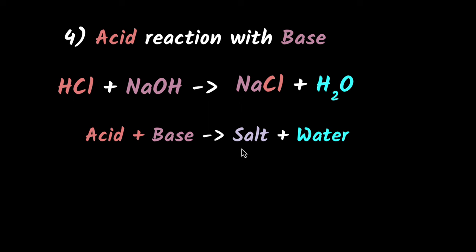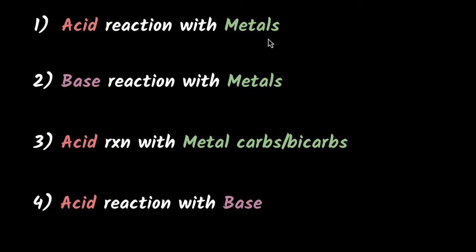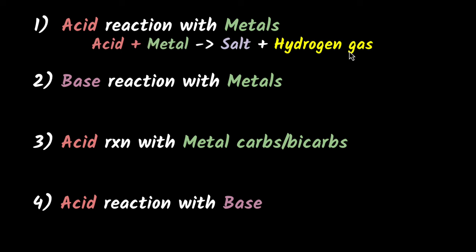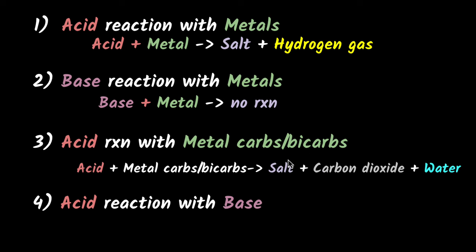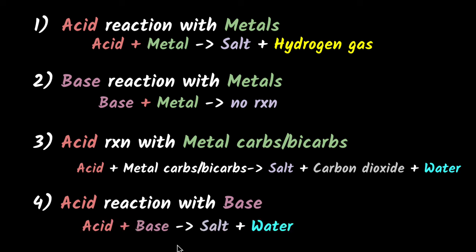Acids and bases always react to give salts and water. Let's summarize: acids react with metals to give salt plus hydrogen gas, because acids are H+ donors. Bases react with metals — in general, nothing, because bases are hydrogen acceptors and metals don't give hydrogen ions, with some exceptional cases. Acids react with metal carbonates or bicarbonates to give a salt plus carbon dioxide plus water. And finally, acids react with bases to give salt and water — the neutralization reaction.